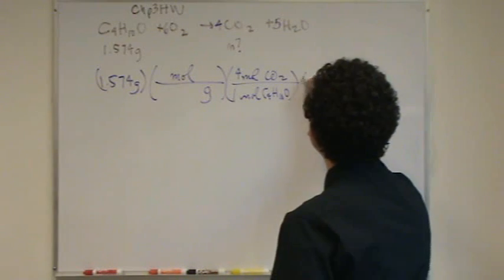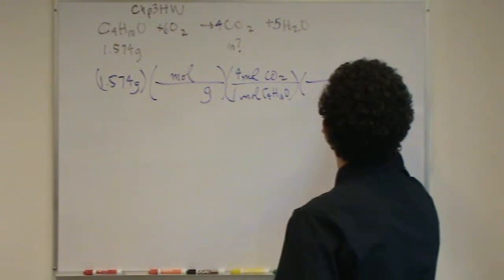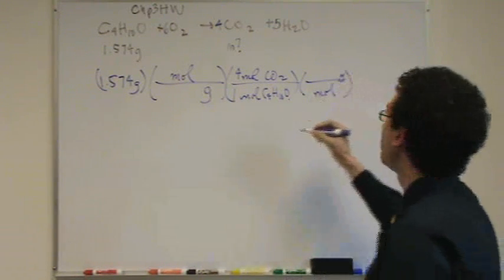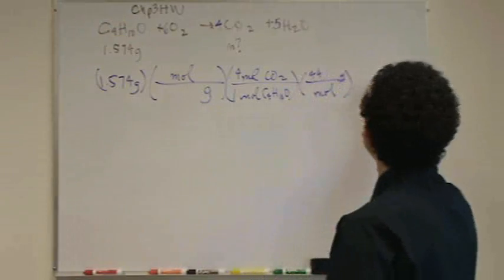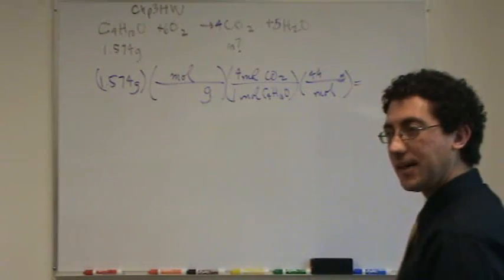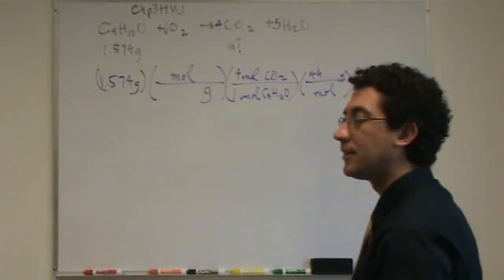And then we've got moles of that, and now I need molar mass, grams per mole. I think I happen to know that for CO2, it's 44 point something. And there we go, that's the mass. Is that set up okay? Yeah.